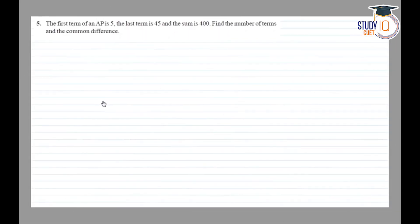Class 10th NCERT Chapter 5, Exercise 5.3, Question Number 5: The first term of an AP is 5, last term is 45, and the sum is 400. Find the number of terms and the common difference.